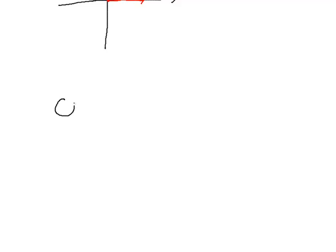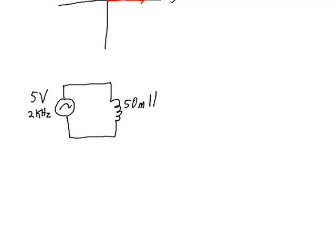Let's look at an example. We've got a signal with a voltage of 5 volts, a frequency of 2 kilohertz, and we're going to define this voltage as having zero phase shift. So this is our sine wave, applied to an inductor — a 50 millihenry inductor. The voltage across the inductor has a peak voltage of 5 volts and a phase angle of zero degrees. What we want to figure out is the peak current and the phase shift of the current.